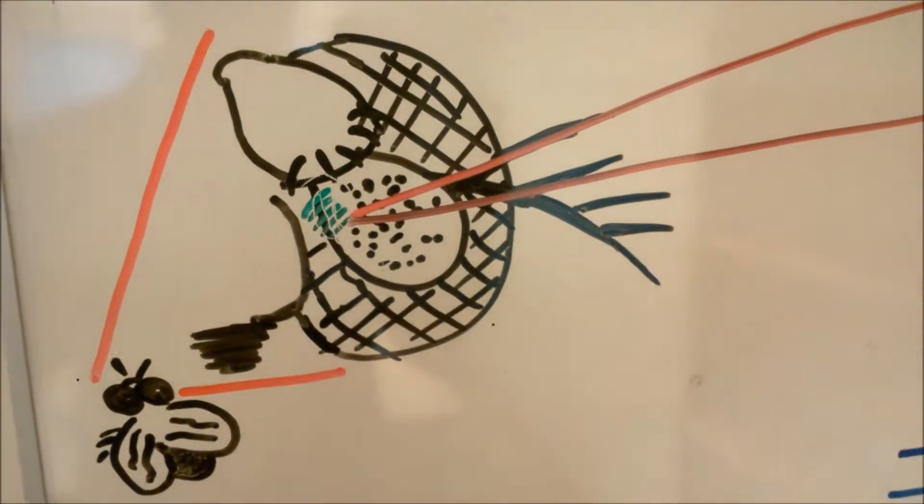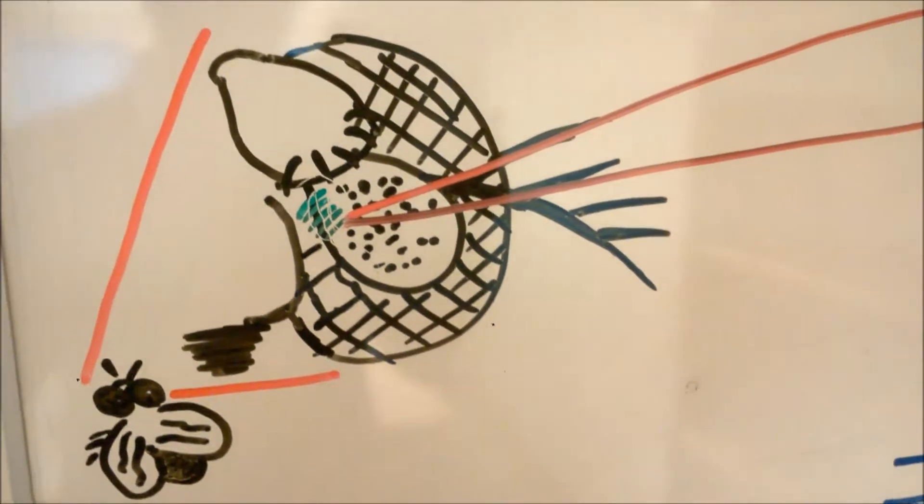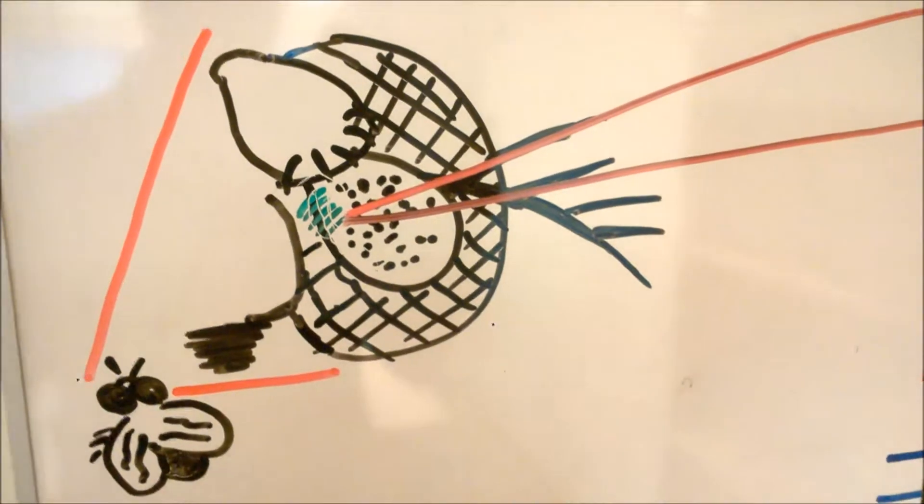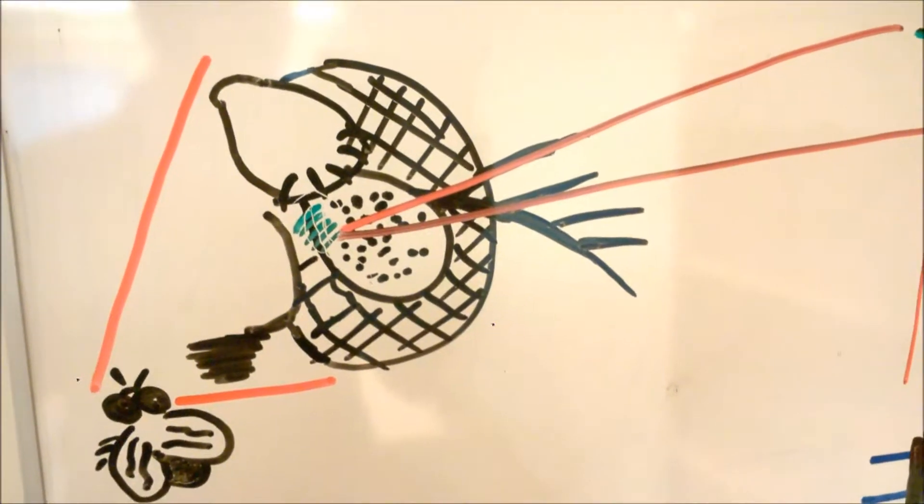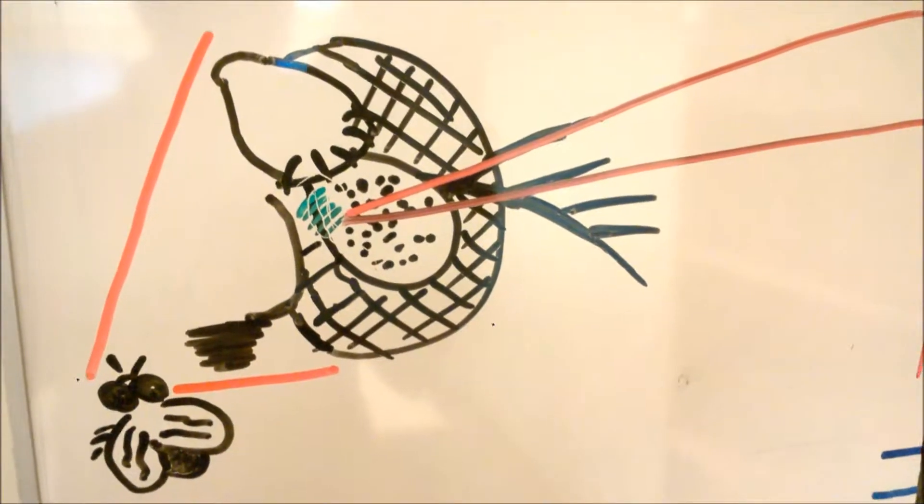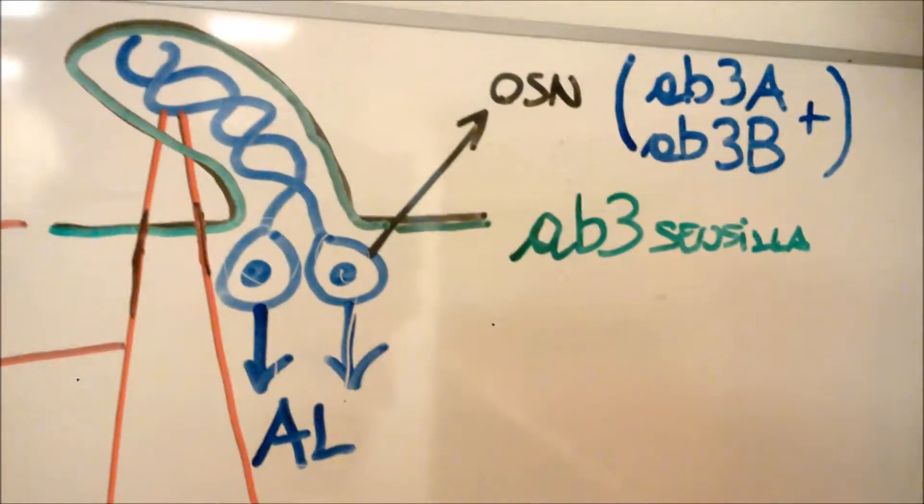On the insect antenna there are thousands of different types of sensilla. Sensilla are specific sensory units provided with a proper set of olfactory sensory neurons, generally called OASENS.